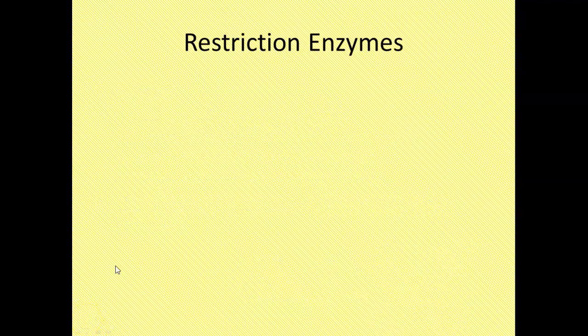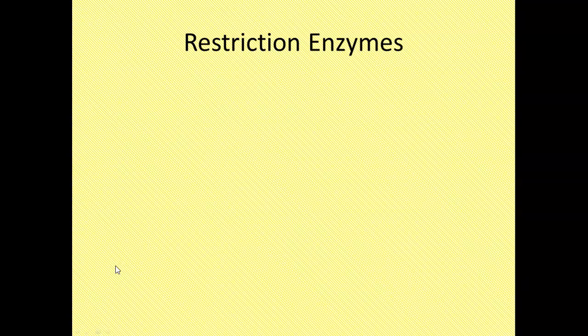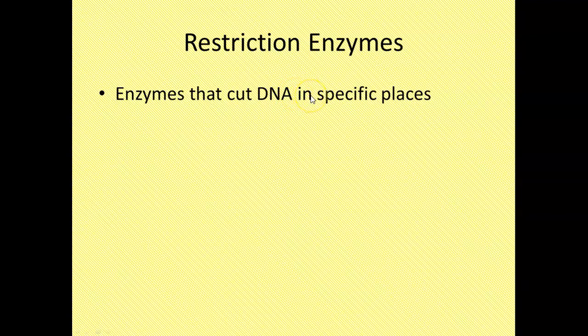Now, another big part of this are restriction enzymes. We've already talked about restriction enzymes when we did gel electrophoresis. Remember how we use these chemicals to chop up the DNA into different pieces? Well, these are the same types of chemicals. These are enzymes that cut DNA in specific places, and those specific places are between certain base pairs.